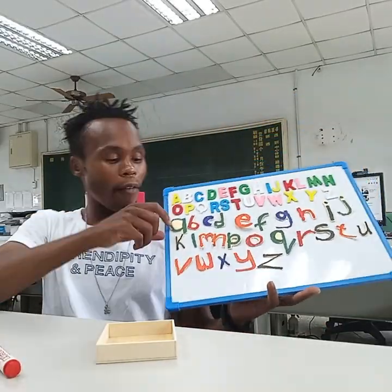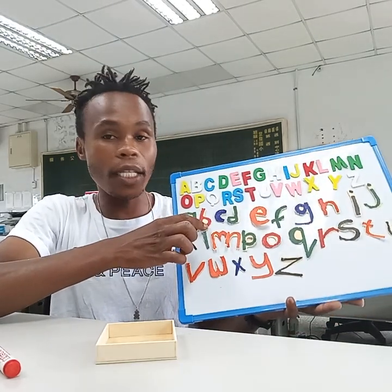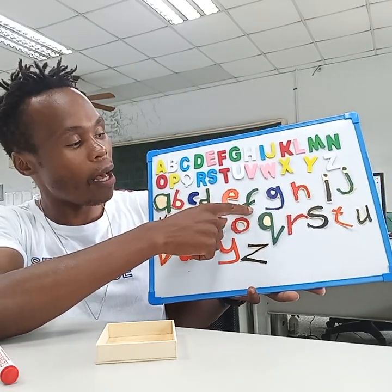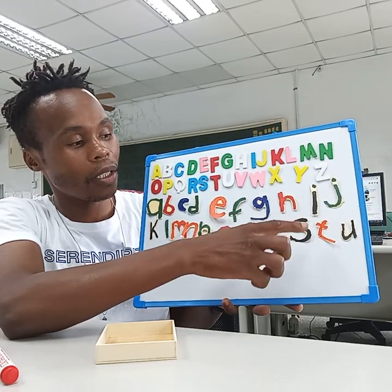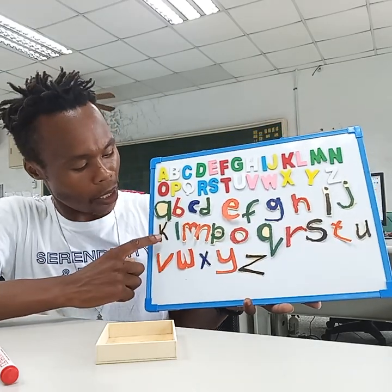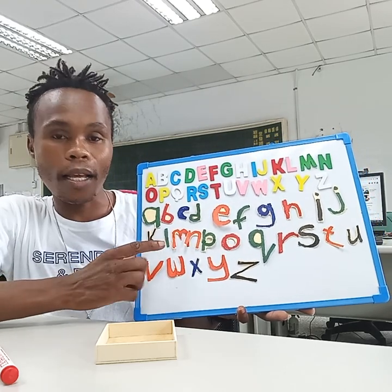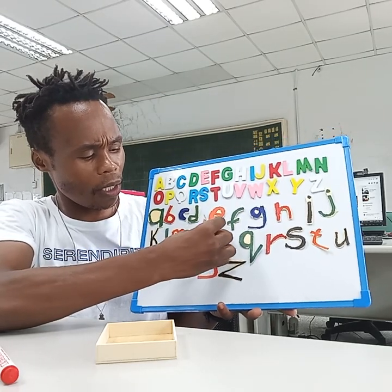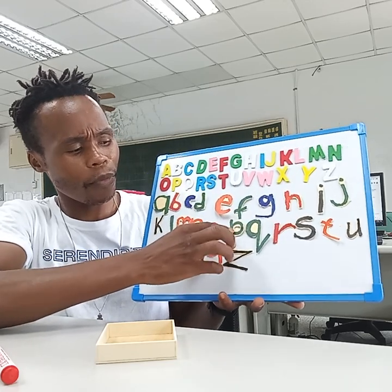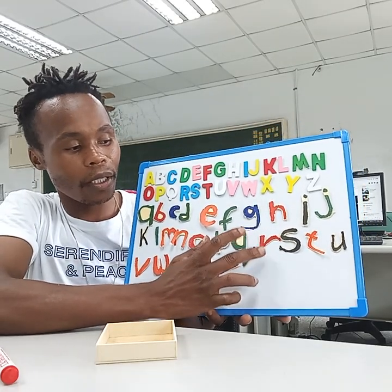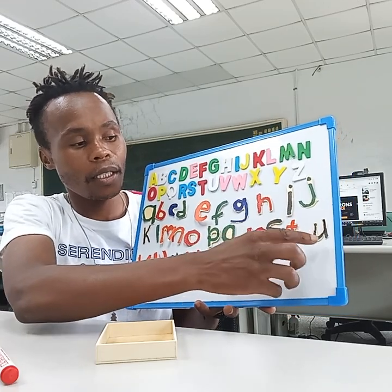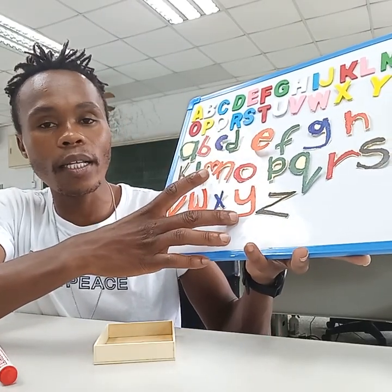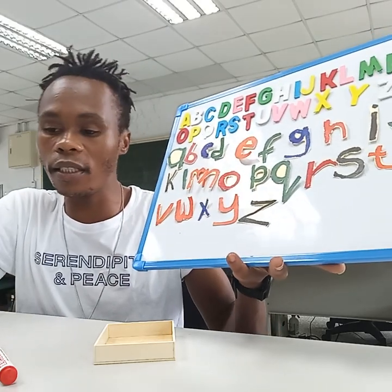Let's recap on our alphabets. A, B, C, D, E, F, G, H, I, J, K, L, M, N, O, P, Q, R, S, T, U, V, W, X, Y, Z. Very good, very good.